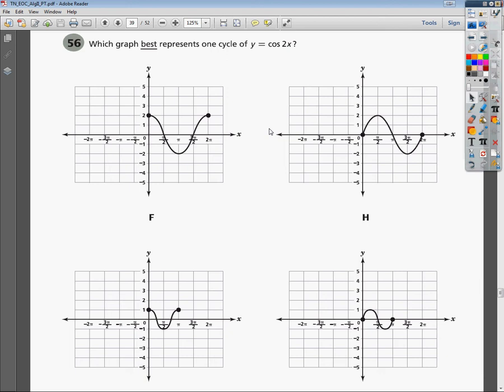Welcome, this is the Algebra 2 end of course practice test, the Tennessee end of course practice test. Question number 56. The question says which graph best represents one cycle of y equals cosine 2x?